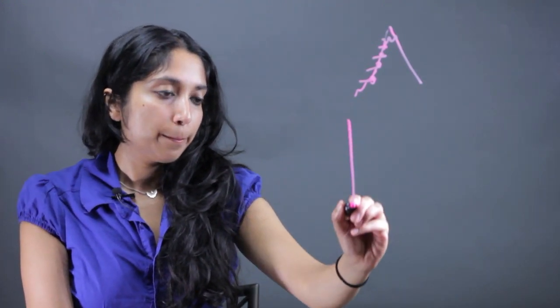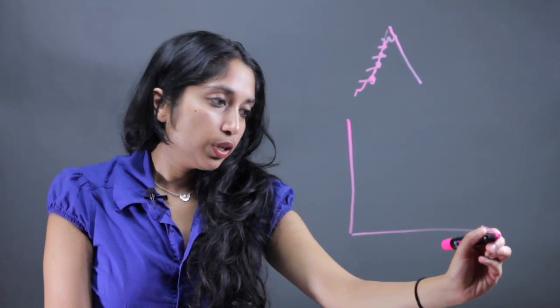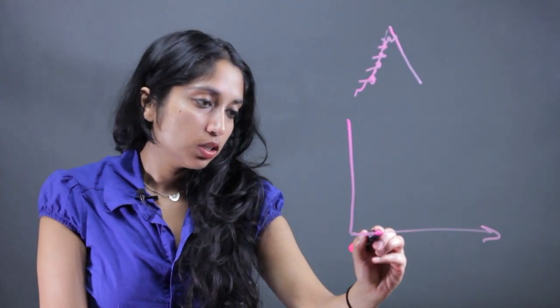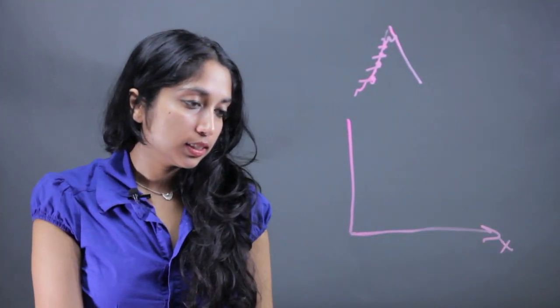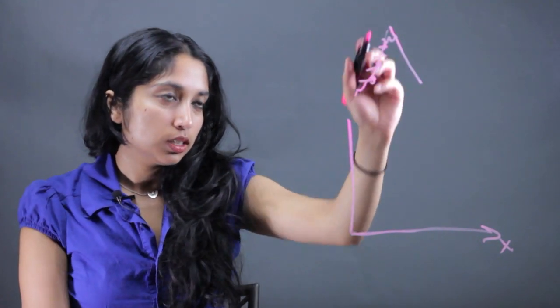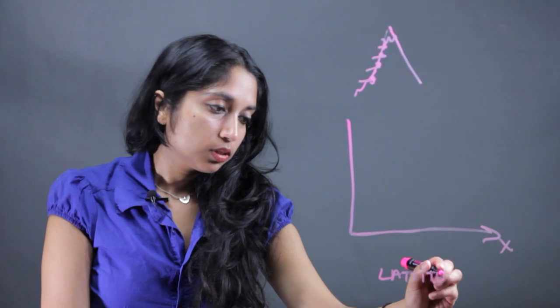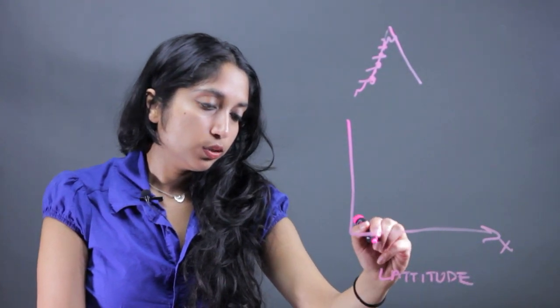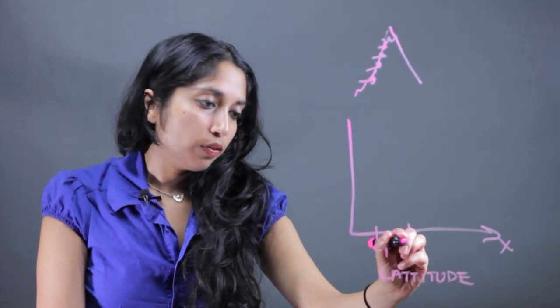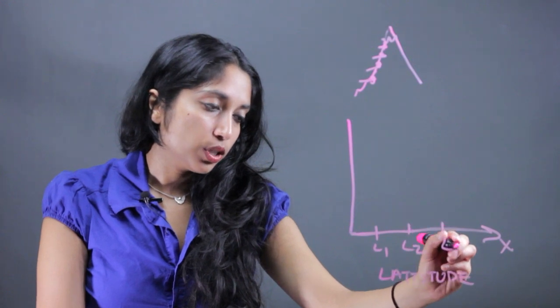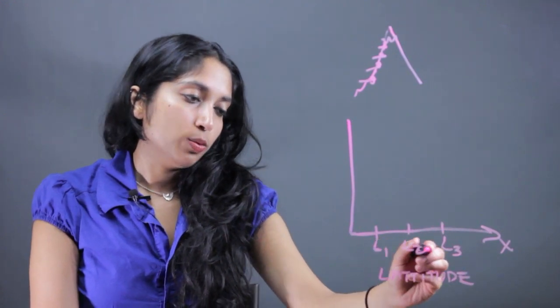In a bar graph, we're going to put the category of data on the x-axis. So in this case, category is going to be latitude. You're going to give whatever measurement of latitude you're using. So I'm just labeling L1, L2, L3.